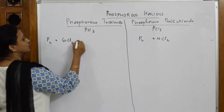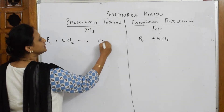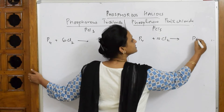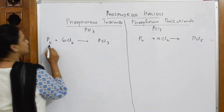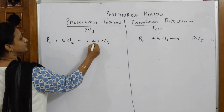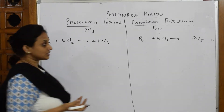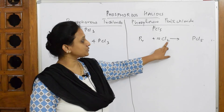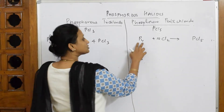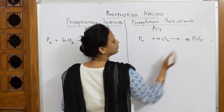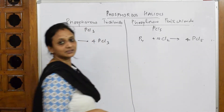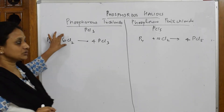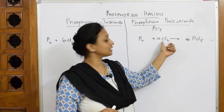So: P4 plus Cl2 gives PCl3, and P4 plus 10 Cl2 gives PCl5. Let us balance. Phosphorus is 4, so we make 4 PCl3; 4×3 = 12 chlorines, so 6 Cl2 — balanced. For PCl5: phosphorus is 4, so 4 PCl5; 4×5 = 20 chlorines, so 10 Cl2 — balanced. Remember: PCl3 requires 6 Cl2, PCl5 requires 10 Cl2.